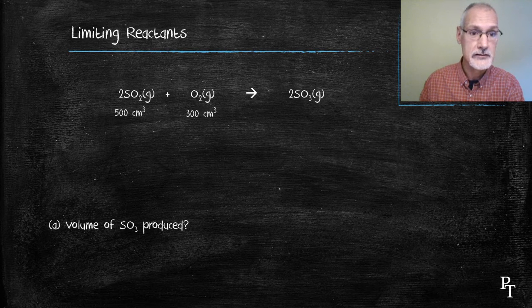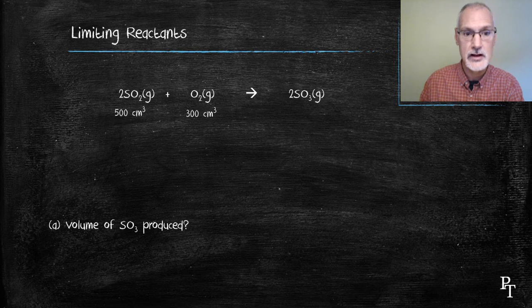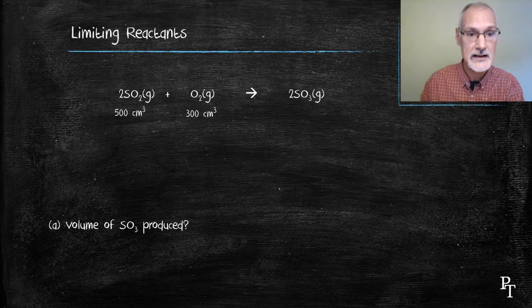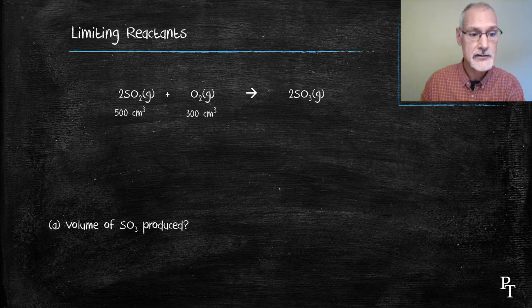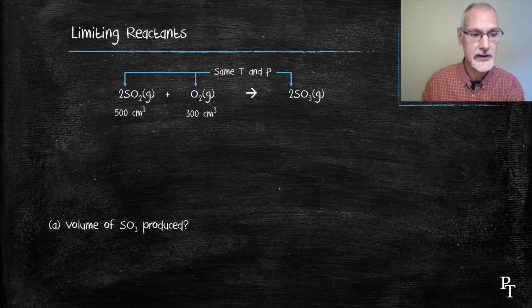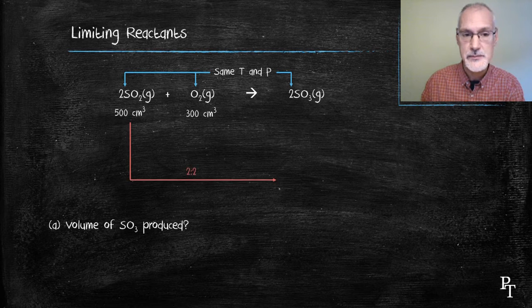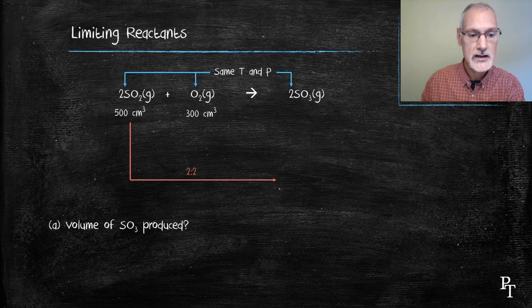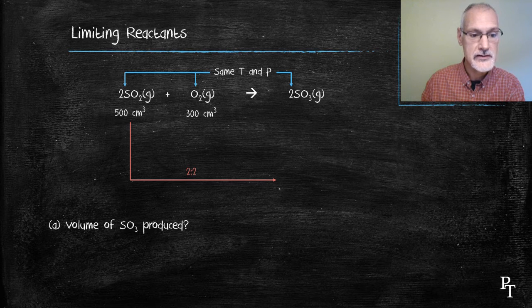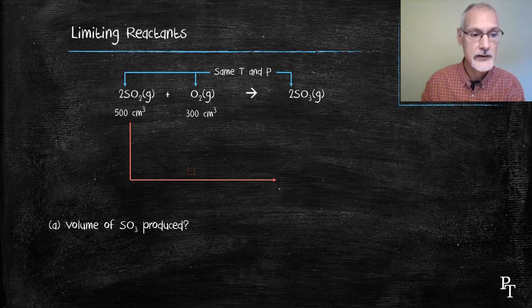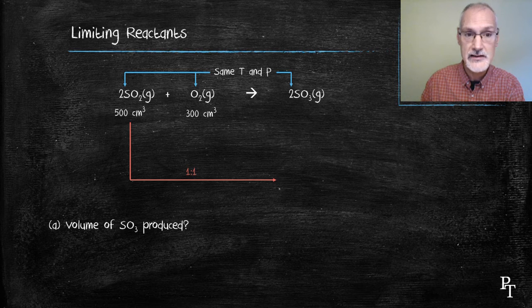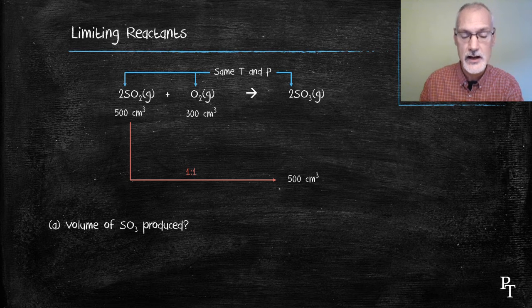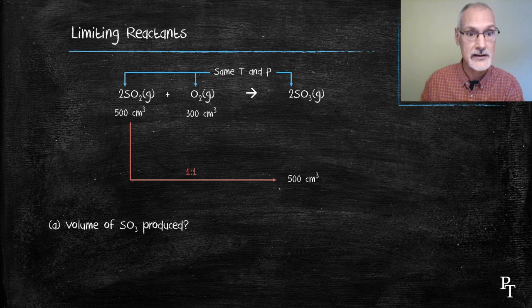You might recall that from an earlier section on reacting limiting reactants I need to consider the two possibilities. So starting with 500 cubic centimeters of sulfur dioxide and all of these gases being at the same temperature and pressure I can employ the ratios. It's two to two or one to one so 500 cubic centimeters of sulfur dioxide would produce exactly the same number of particles of sulfur trioxide and as a result exactly the same volume.